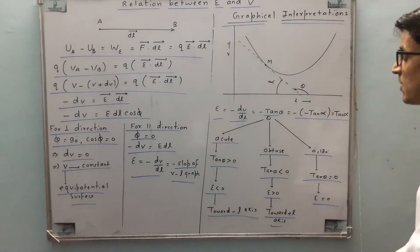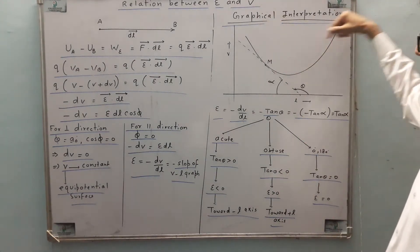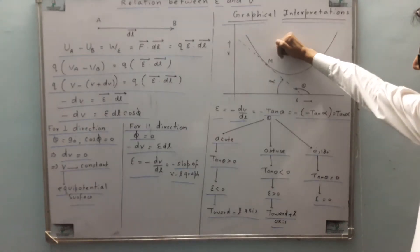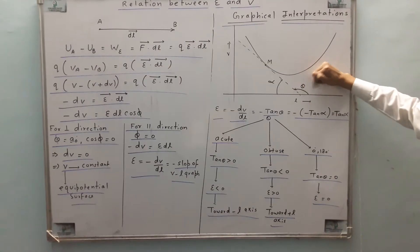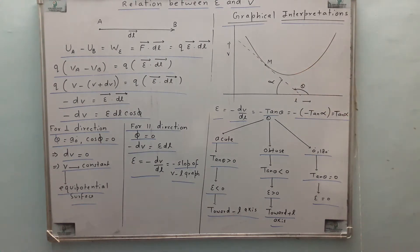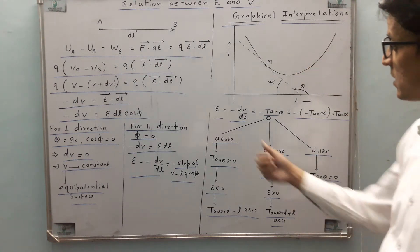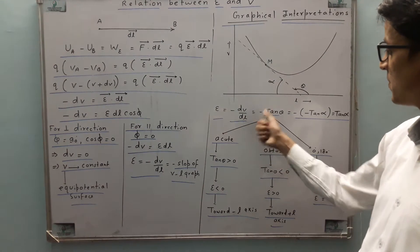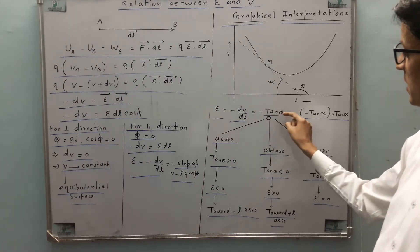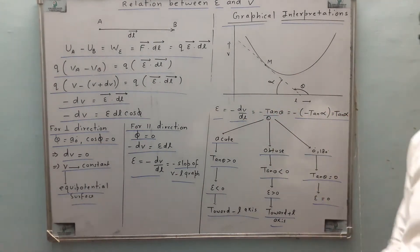Now let's analyze the V-L graph. Suppose the V-L graph is like this. I draw a tangent at point M. Suppose the tangent makes angle theta in the anticlockwise direction and alpha in the clockwise direction. We have electric field as minus dV by dL. dV by dL is either tan theta or minus tan alpha.